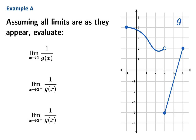Let's put this all together with a few examples. Here's a function g, and assuming the limits are all as they appear to be, we're going to evaluate limits of the reciprocal function. As x approaches 1, the limiting value of g appears to be 3. Since 3 is non-zero, the limiting value of the reciprocal is going to be 1 third.